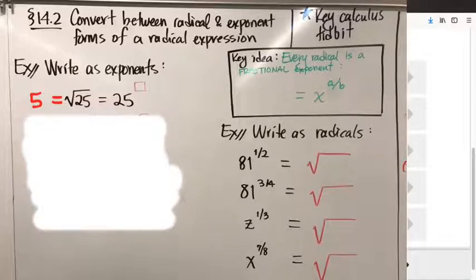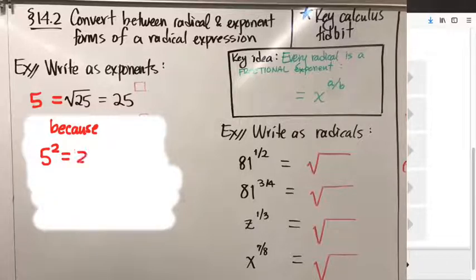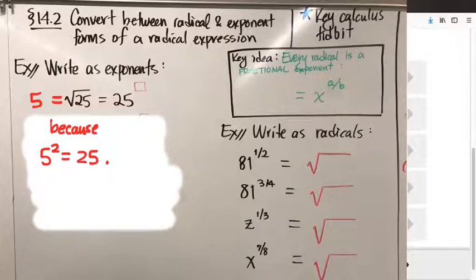The square root of 25 is equal to 5 because 5 squared is equal to 25. That's the mental logic we're used to thinking about when we compute square roots — it becomes almost automatic. But I want to slow down that automatic process for a second because we can discover a new principle out of it.